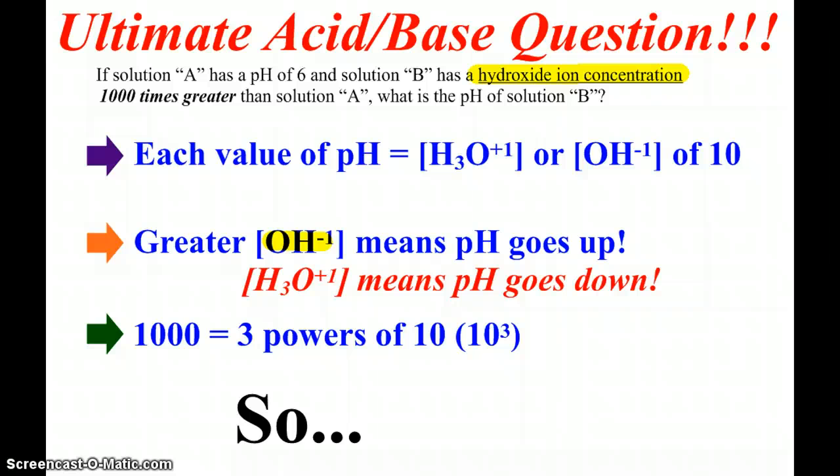If we're looking at hydroxide ion concentration, then the pH is going up, because that represents base. If we see hydronium concentration, the pH is going down, because that's acid.